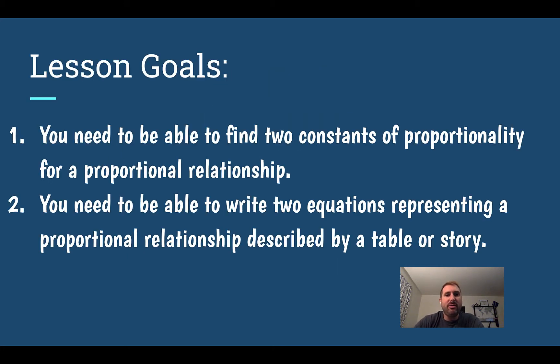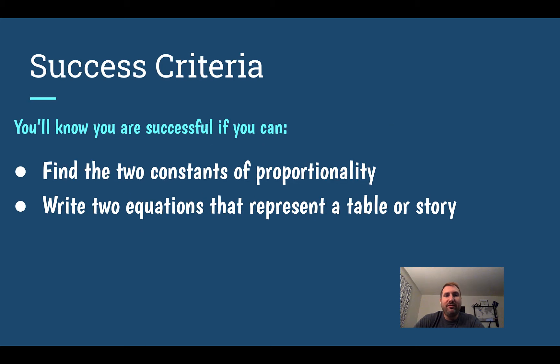After this lesson, you need to be able to find two constants of proportionality for a proportional relationship, and you need to be able to write two equations representing a proportional relationship described by a table or story. You'll know you're successful if you can find the two constants of proportionality and write two equations that represent a table or story.